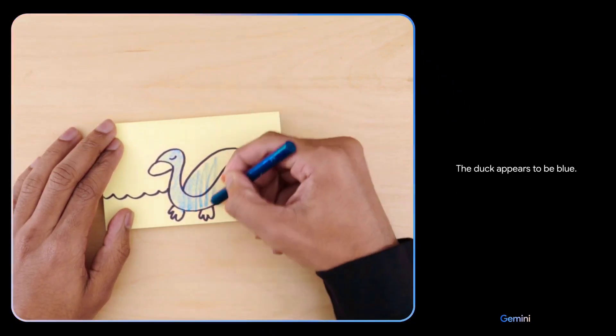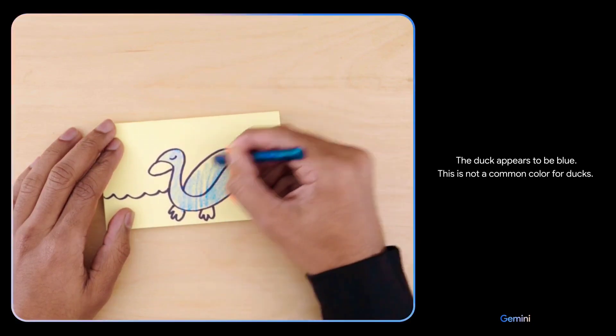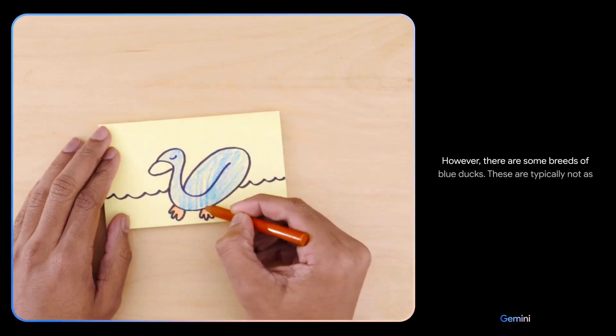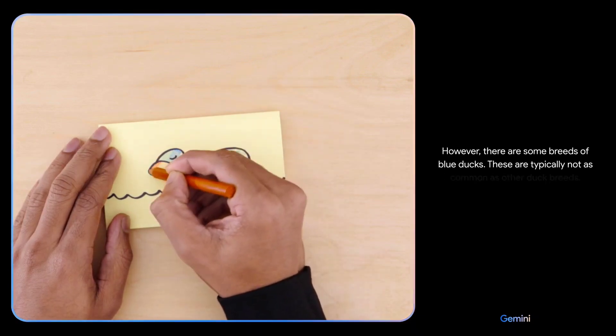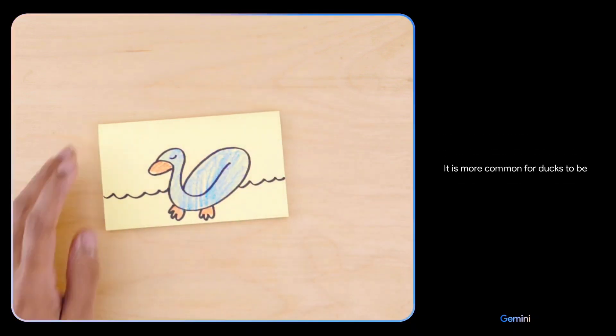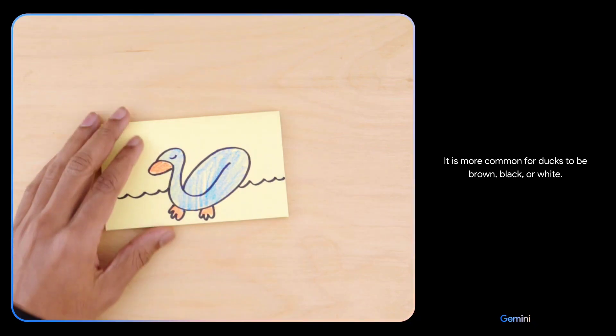The duck appears to be blue. This is not a common color for ducks. However, there are some breeds of blue ducks. These are typically not as common as other duck breeds. It is more common for ducks to be brown, black or white.